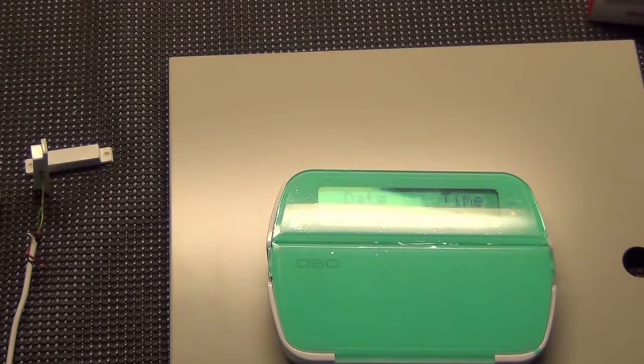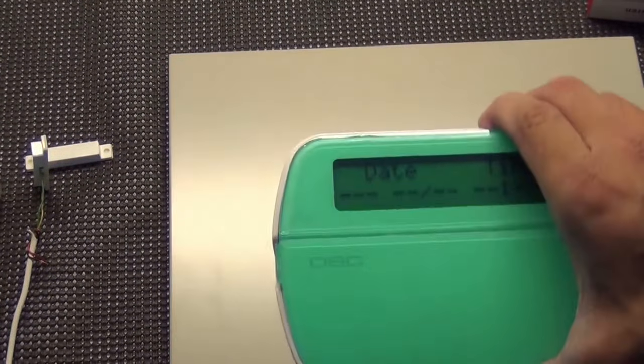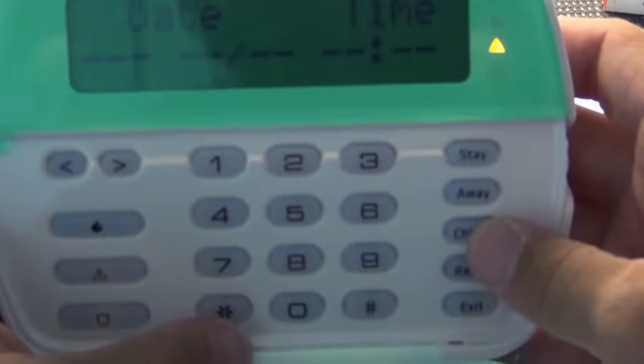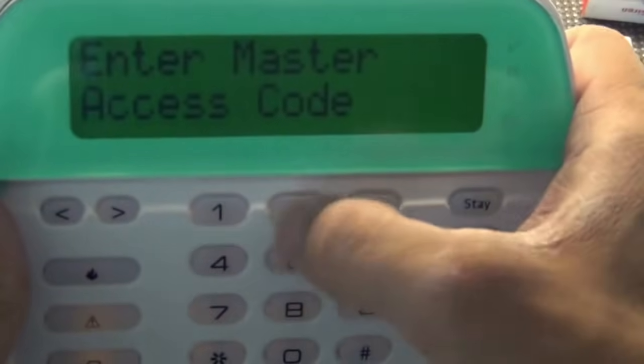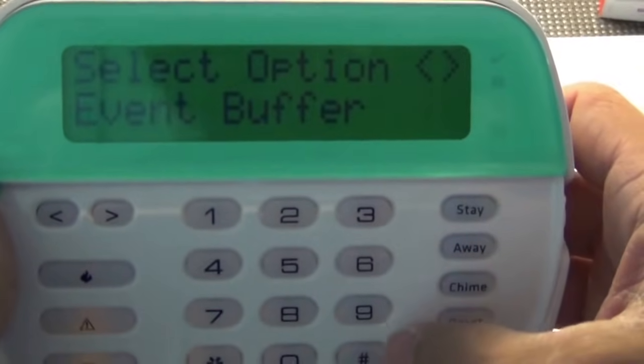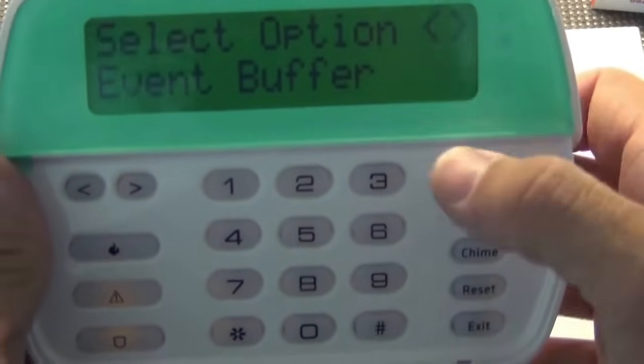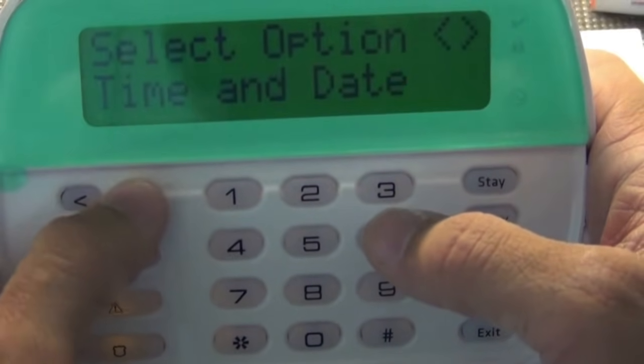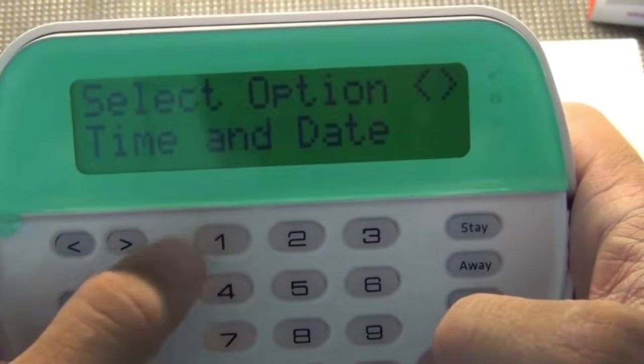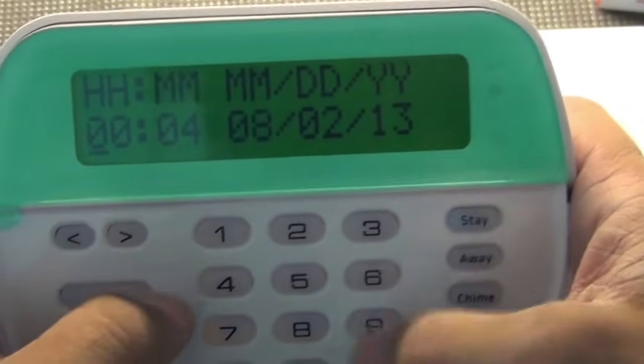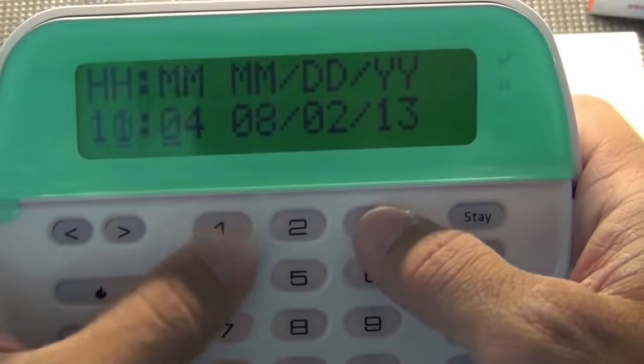If you've got a quick start guide, you can follow along. This first part, what I'm going to do is step one in the quick start guide is going to be setting your date and time. You can simply do that by entering star six, your master code, which by default is one, two, three, four. And then you can use your arrow keys and go through and do different things. I usually just typically just hit one, which is set date and time.